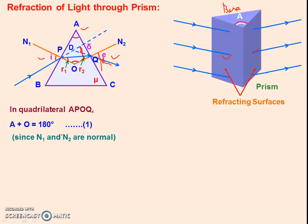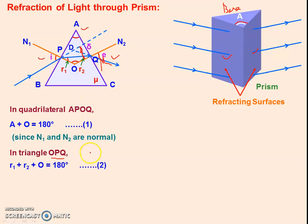Now see triangle OPQ. In this triangle, the sum of angles equals 180 degrees. So angle O plus R1 plus R2 equals 180 degrees. We can write it as R1 plus R2 plus O equals 180 degrees. This is the second equation.